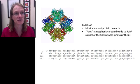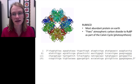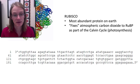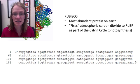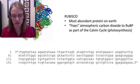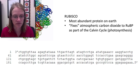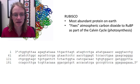Rubisco is a very important protein, and the instructions for it are in DNA. At the bottom of the screen is a partial sequence of the gene that codes for Rubisco. That represents the template DNA with the gene coding for this particular protein, and that's what we'll be working with today.